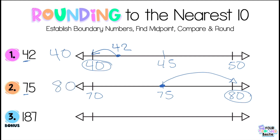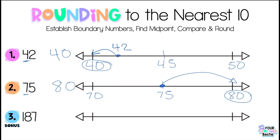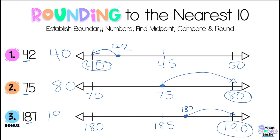It is bonus time! Make sure you pause the video now so you can challenge yourself and figure this out on your own, then unpause and check your work with me. We have the number 187, and we're going to do step one: underline the tens place — we're underlining the 8 — and then establish the boundary numbers: 180 and the next ten is 190. Now we establish the midpoint, which is 185. We compare our number to the midpoint: 187 is greater than 185, so we're going to round up to 190. So 187 rounded to the nearest 10 is 190.